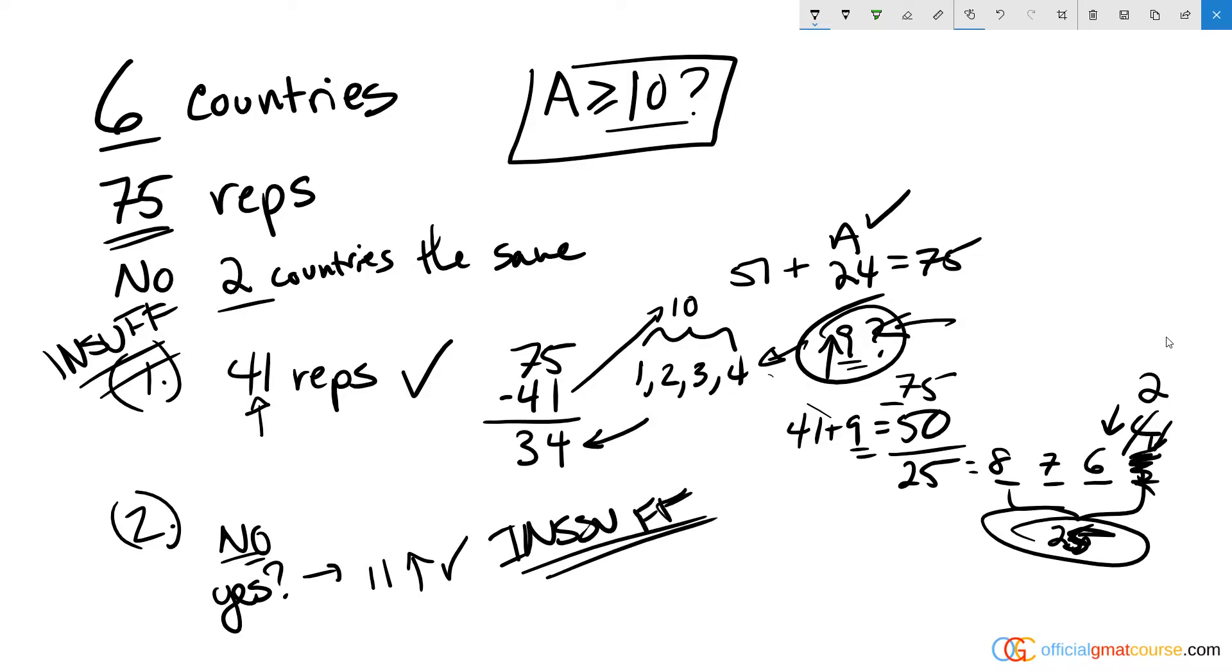Looking at the two statements together, do they add value to each other? Well, I don't think they do because we already assessed in statement two, the same situation that we were using from statement one, we were already assuming when we did this math and moved the smallest number of reps down to two, that we had a total of 50 reps between,